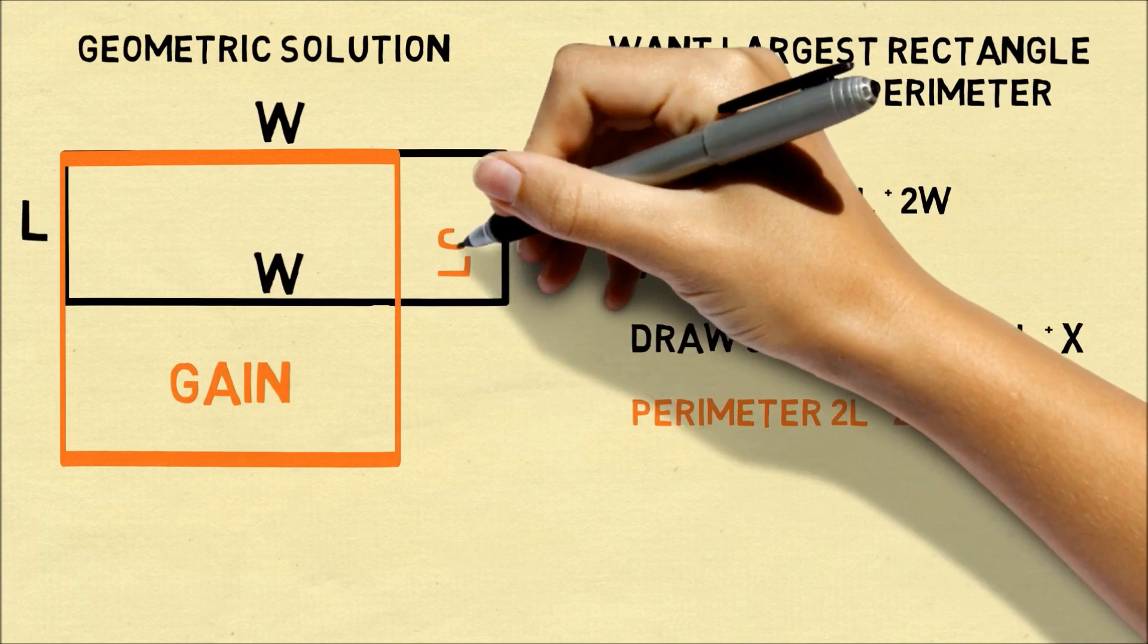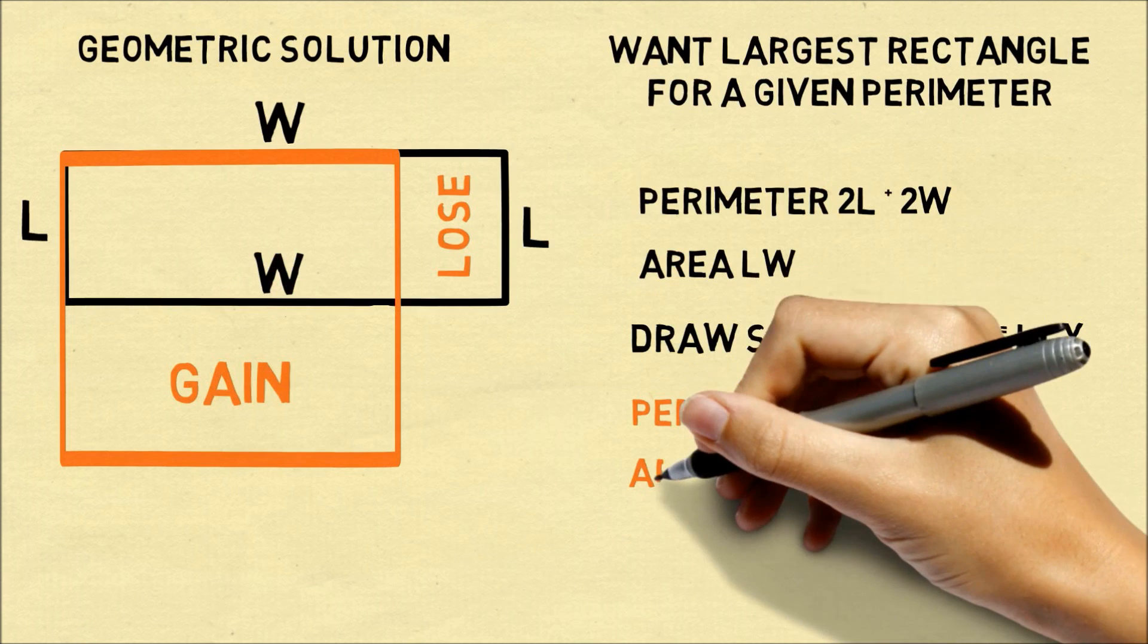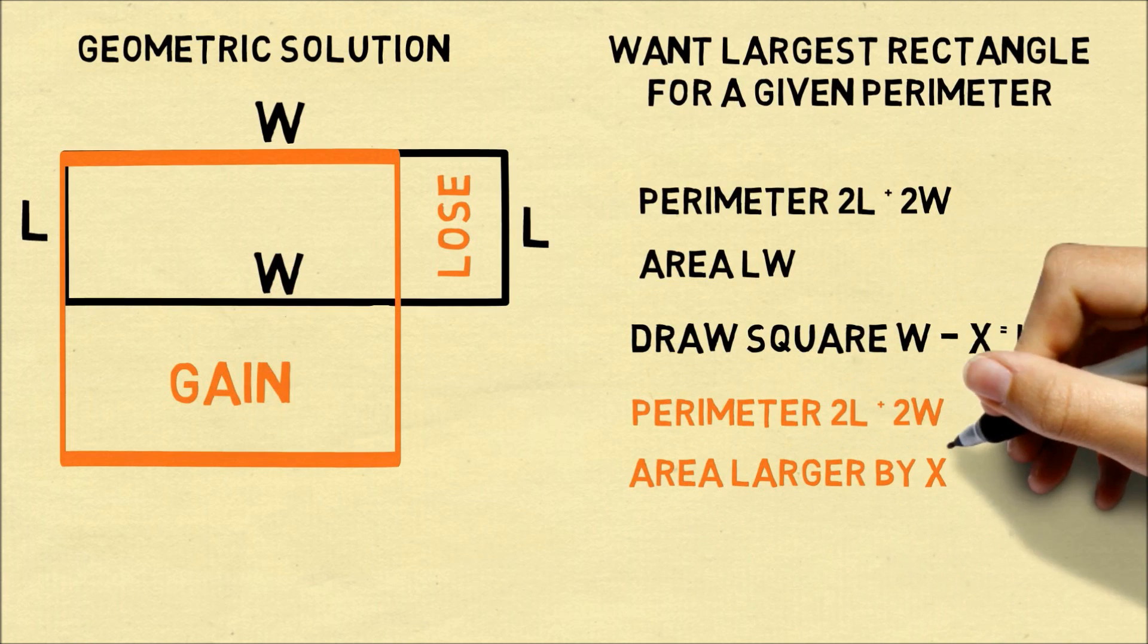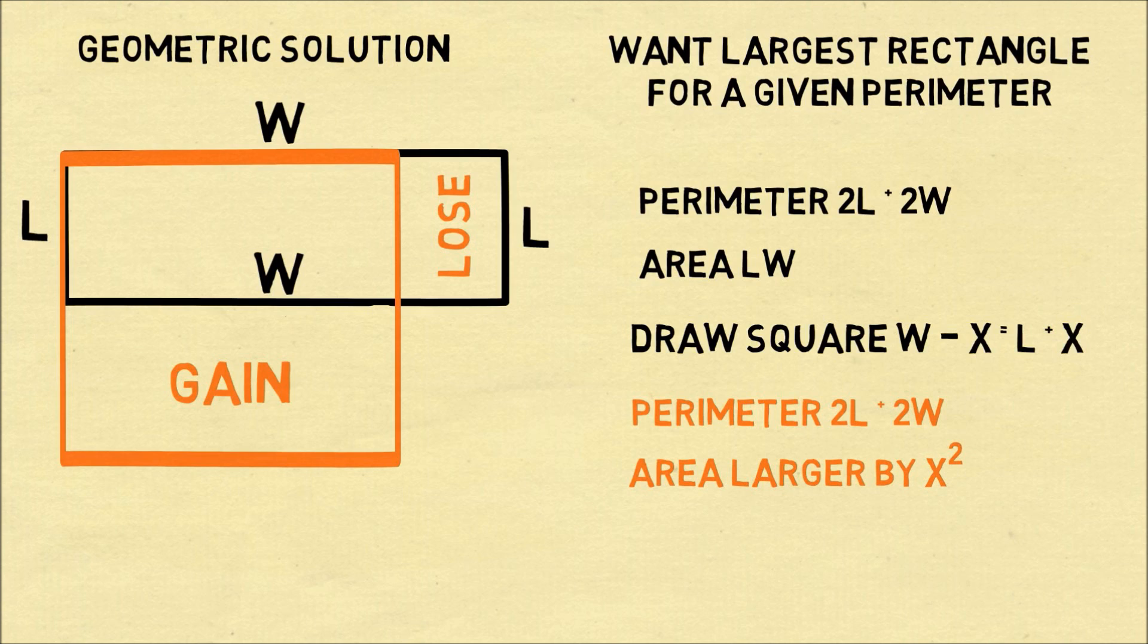But now when you look at the area you're going to gain this large rectangle and you might lose that other rectangle. So the area is actually larger by a factor of x squared.